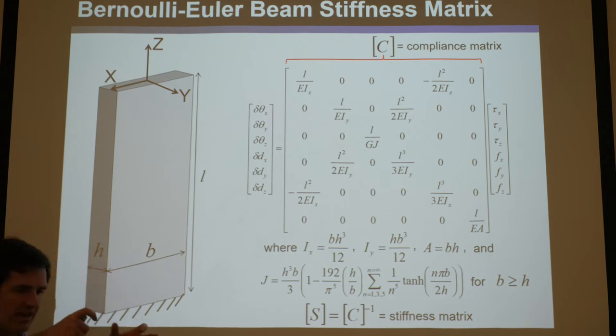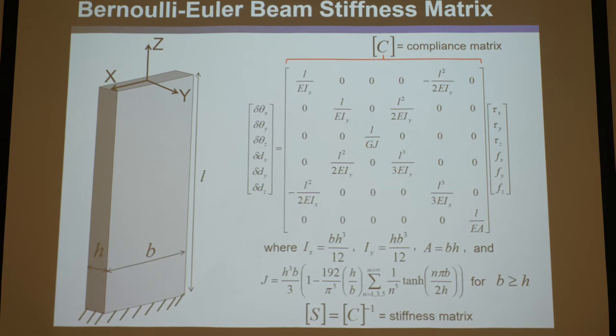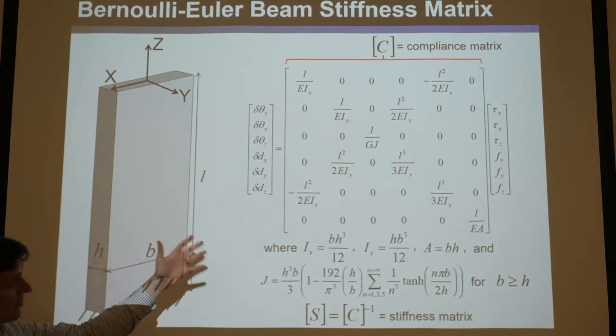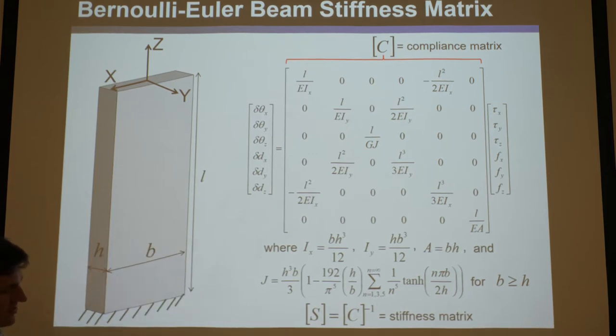B and H are roughly within the ballpark — not huge orders of magnitude larger or smaller than each other. Okay, that's Euler's equations — use that.